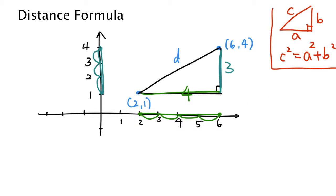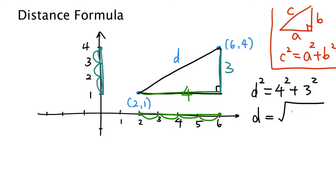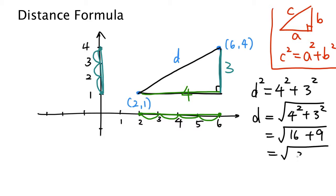Now if we apply the Pythagorean theorem, we have: D squared equals 4 squared plus 3 squared. If we take the square root of both sides, we get D equals the square root of 4 squared plus 3 squared. 4 squared is 16, 3 squared is 9, and 16 plus 9 is 25. So D equals 5 — the distance is 5.